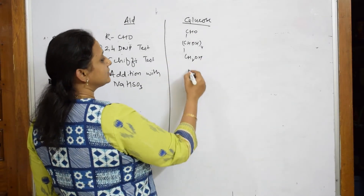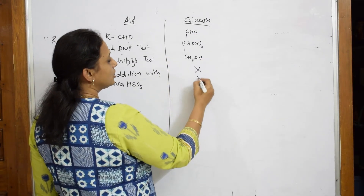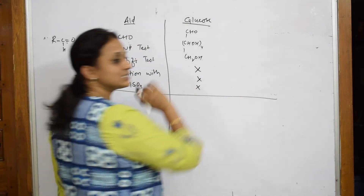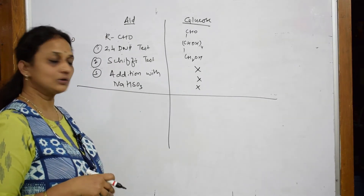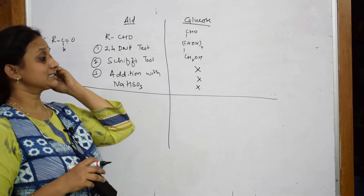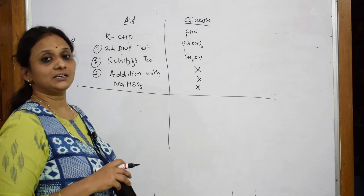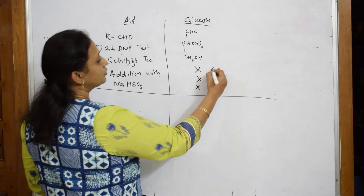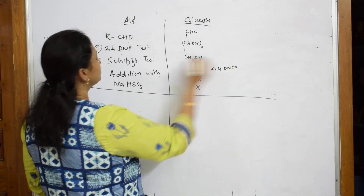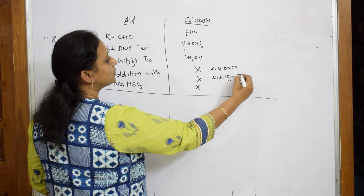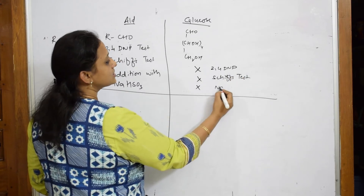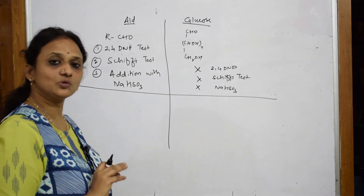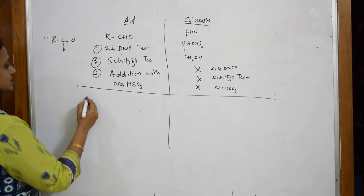However, glucose, though it appears to have an aldehyde, does not show any of these three tests. When you add all these reagents to glucose, it does not respond. So we conclude that glucose does not have a free aldehyde — it is not responding to the 2,4-DNP test, not responding to Schiff's test, and not responding to the NaHSO₃ test. This is the main difference showing glucose doesn't have a free aldehyde.